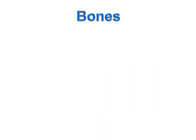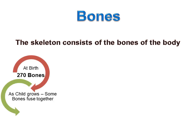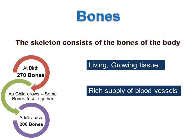The skeleton per se consists of bones of the body. At birth, there are about 270 bones. As a child grows, some of these bones fuse together and adults have 206 bones. Bone is a living, growing tissue with a rich supply of blood vessels. Therefore, bone tissue can recover from injuries in a relatively short time.